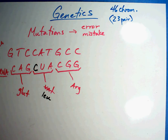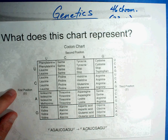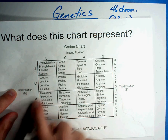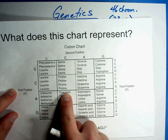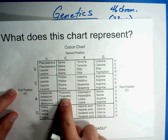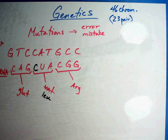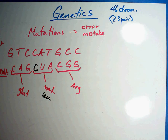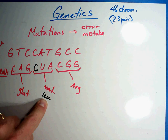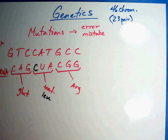Where would be a chance where it wouldn't affect anything? Notice that if you had ACU, it's threonine. If you had a mistake and it made ACC, it's still threonine. So that really wouldn't be a mistake that would hurt anything — you'd get the same answer. But in some cases you get a completely different amino acid, so the protein just doesn't work right in the cell.